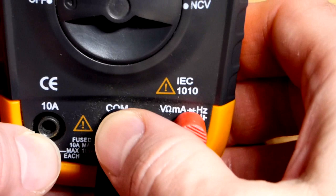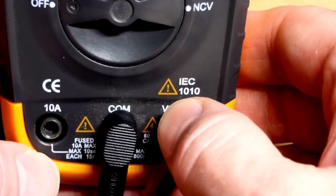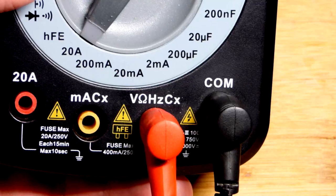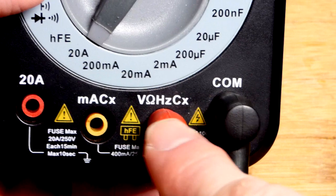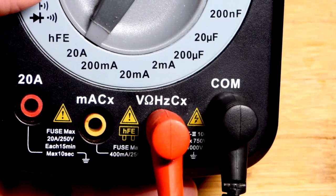The black probe almost always goes to COM with multimeters. The red probe you want to make sure you put in the right spot, so we got voltage there. We only move it there for high current. We got V there for the red probe and the COM for the black probe.